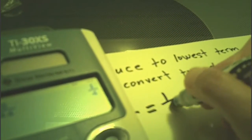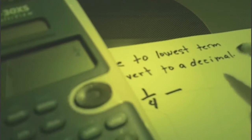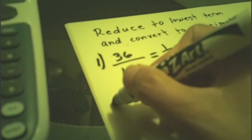Then press Enter. The result is 1 over 4. Now we convert that to a decimal — press the toggle button, the double arrow above the Enter button. Press toggle and you can see the answer is 0.25. Now number two.